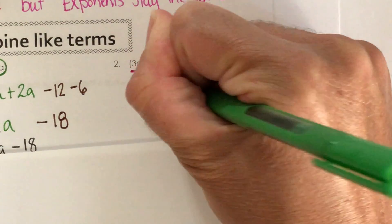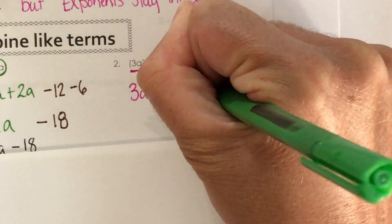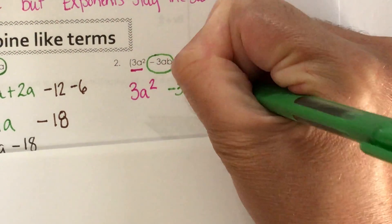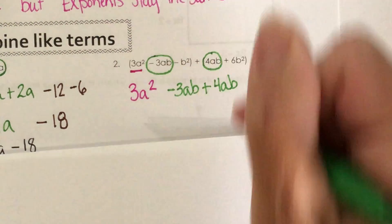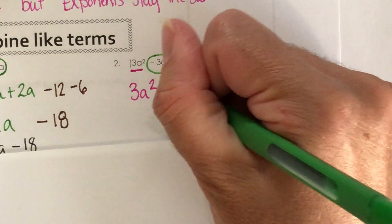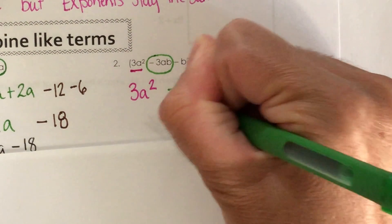So I'm going to put a negative 3ab and a 4ab together. And when I combine them, negative 3 plus 4 is going to leave me with a 1ab.